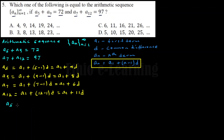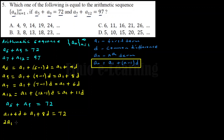A sub 5 plus A sub 9 equals 72. Substituting: (A sub 1 plus 4D) plus (A sub 1 plus 8D) equals 72. Combining: 2A sub 1 plus 12D equals 72. This is equation 1.